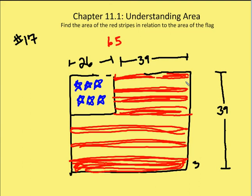So we count the stripes: 1, 2, 3, 4, 5, 6, 7, 8, 9, 10, 11, 12, 13. So we know that the width of each of the stripes, including the white stripes, is going to be 3.